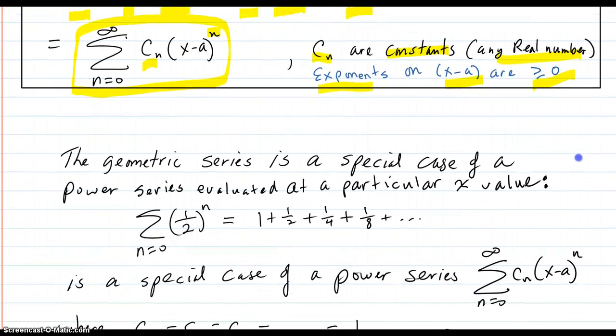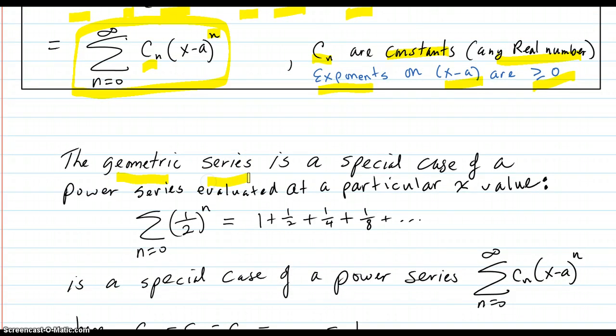The geometric series that we've seen before is a special case of a power series evaluated at a particular x value. Let's take this geometric series, the one that has 1 plus 1/2 plus 1/4 plus 1/8. That's (1/2)^n.